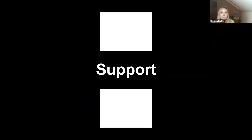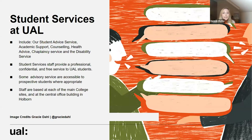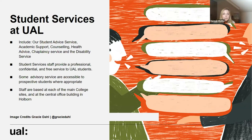In terms of support services, our student services are based at Camberwell, with a central hub also in High Holborn. Services include student advice, academic support, counselling, health advice, multi-faith chaplaincy, and disability support — all completely confidential and free. Some advisory services can be used before you join; for example, you can speak to financial advisors about financing your studies, or if you're an international student, immigration specialists can support you with visa queries.